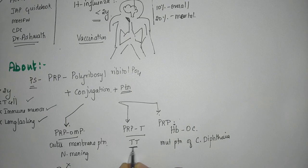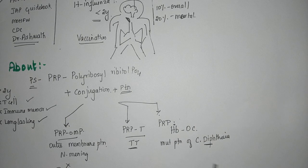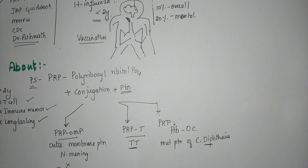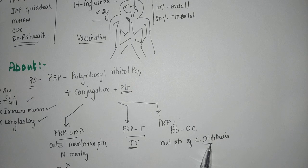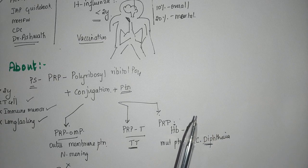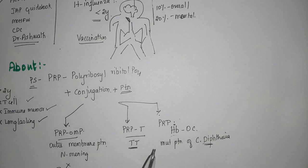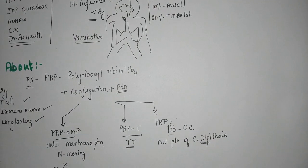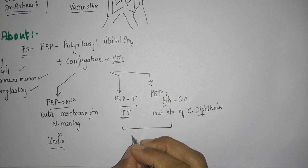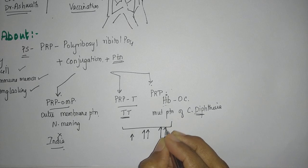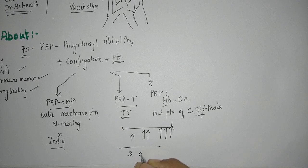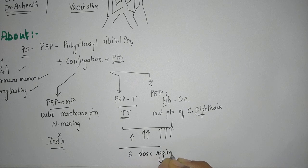These are all just carriers. The tetanus and diphtheria proteins are just carriers. They will not produce immunity for tetanus and diphtheria. They are just going to act as a vehicle to produce immunity to your Haemophilus influenza. What they found was the first injection increased antibody responses, second boosted it, and the third boosted it even more. So they ended up with a three dose regimen.